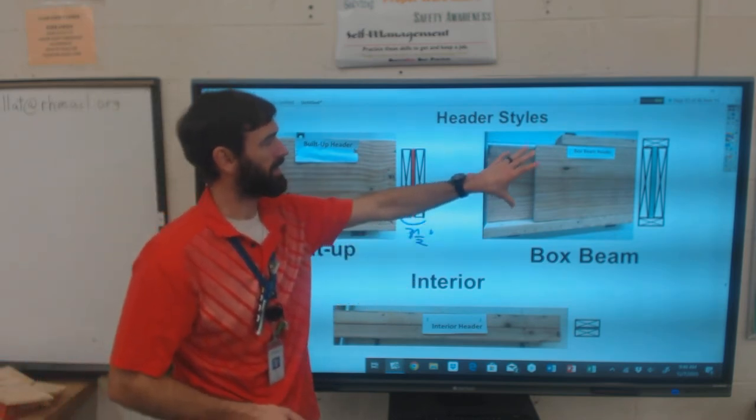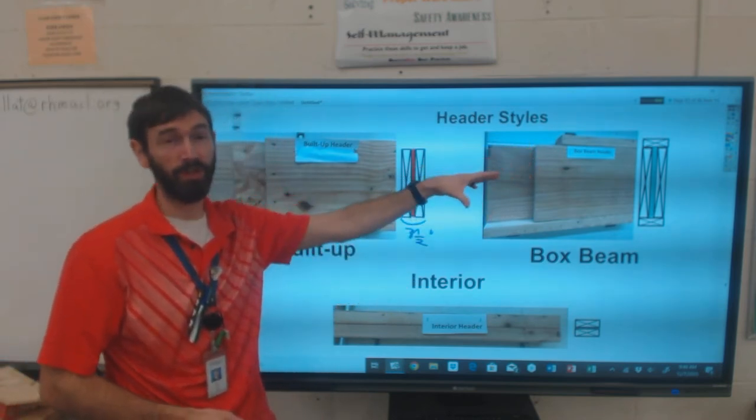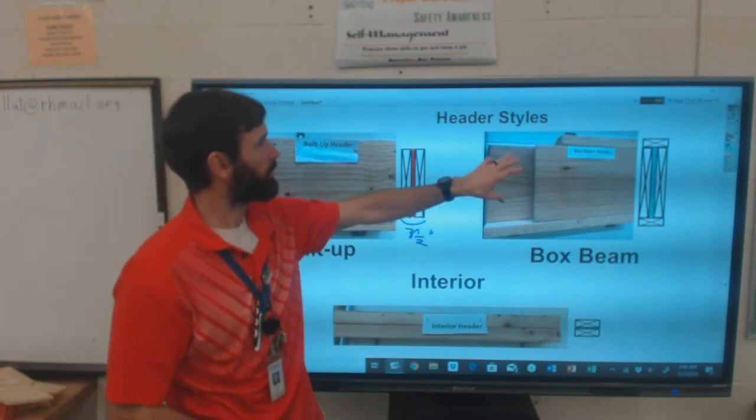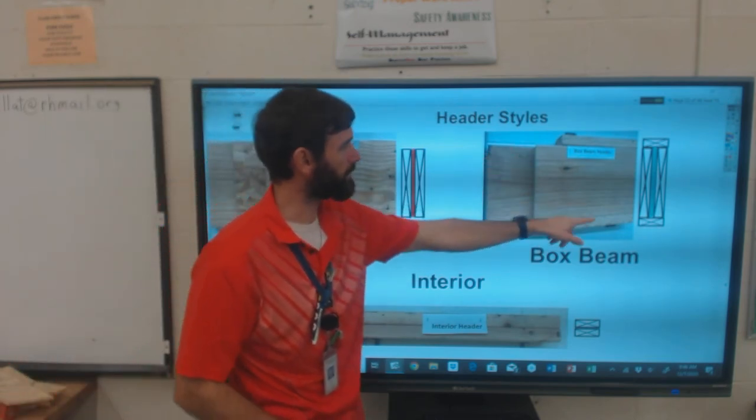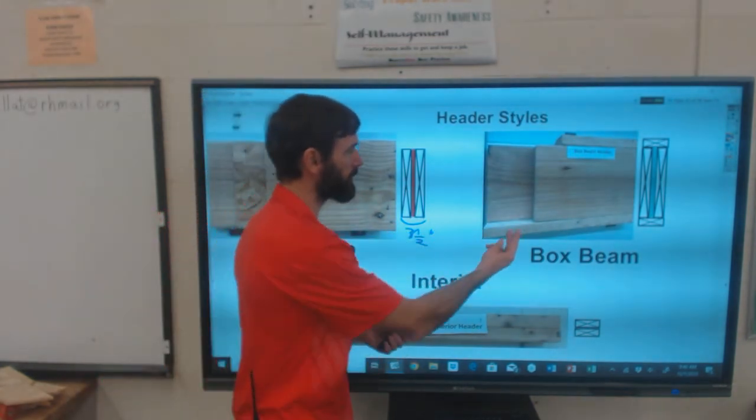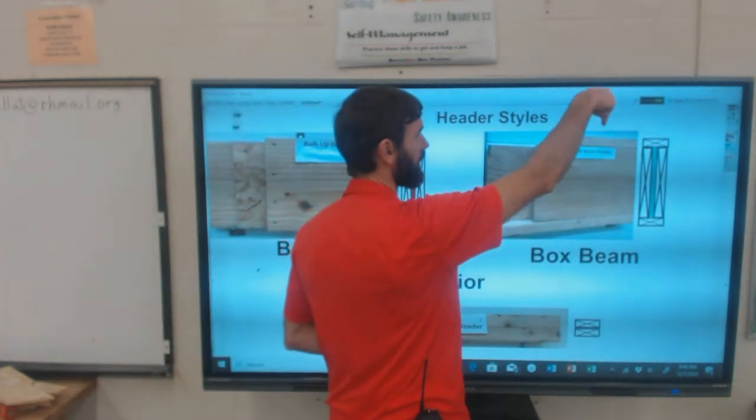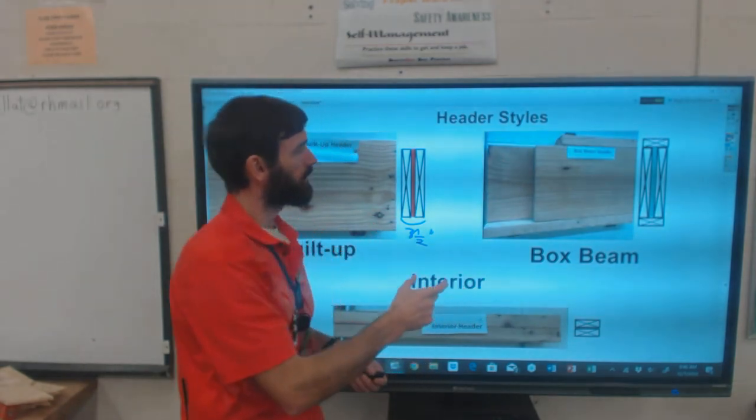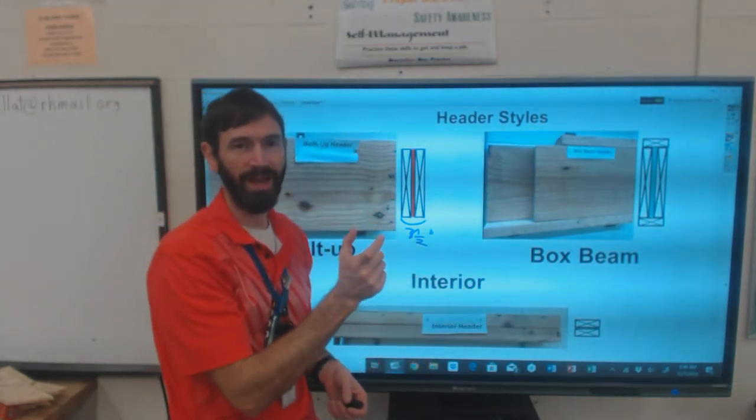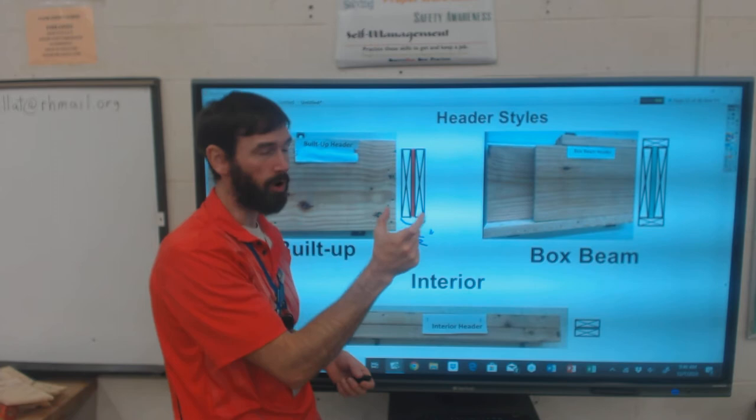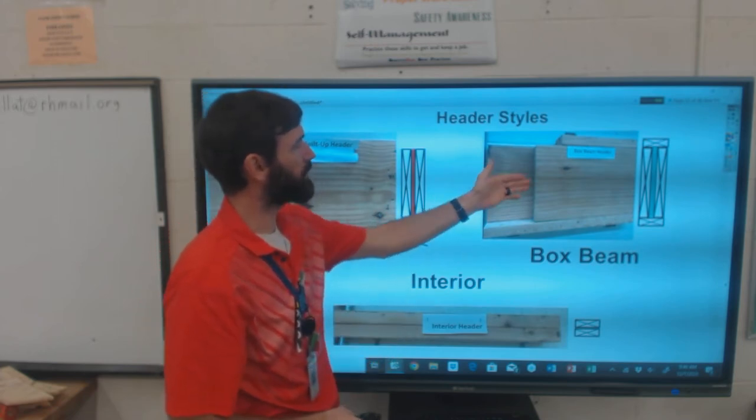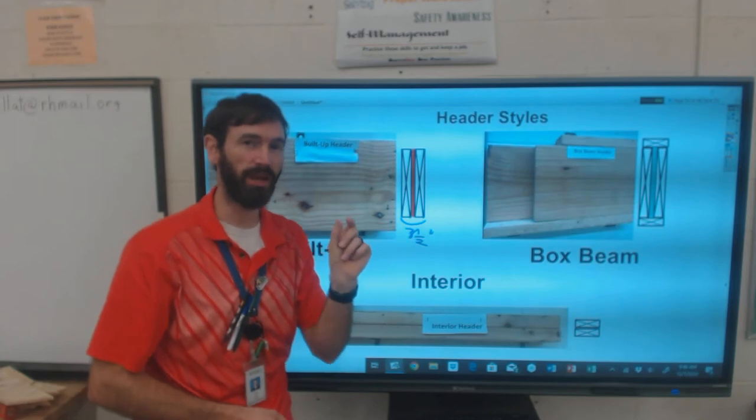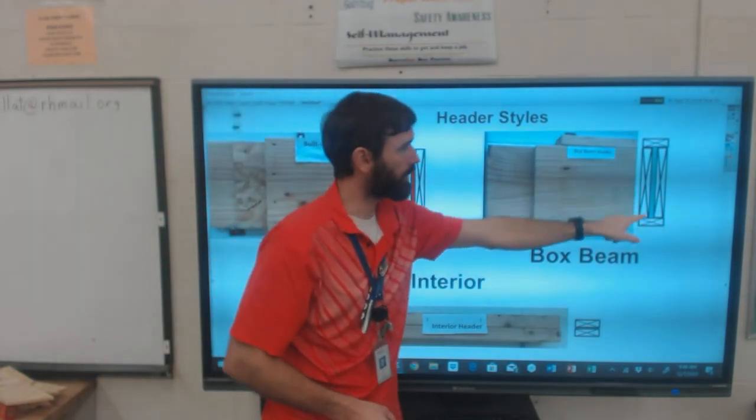Another option is a box beam header. This is also pretty popular. You've got your two-by piece here, your two-by piece here, and then you have a bottom and top cord of two-by-fours. Those are nailed in from the bottom and from the top. Because you have that three and a half inch thick wall, there's a half inch of air space noted in blue here.